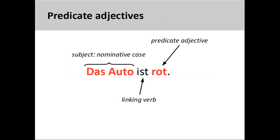Predicate adjectives are also in the nominative case. Predicate adjectives are simply adjectives that appear after a linking verb in a sentence and, in essence, provide more information about the subject. In the sentence you see on the screen, 'das Auto ist rot' — the car is red — 'das Auto' is the subject of the sentence and, therefore, in the nominative case. The adjective 'rot' is also in the nominative case as it appears after the linking verb 'ist'.